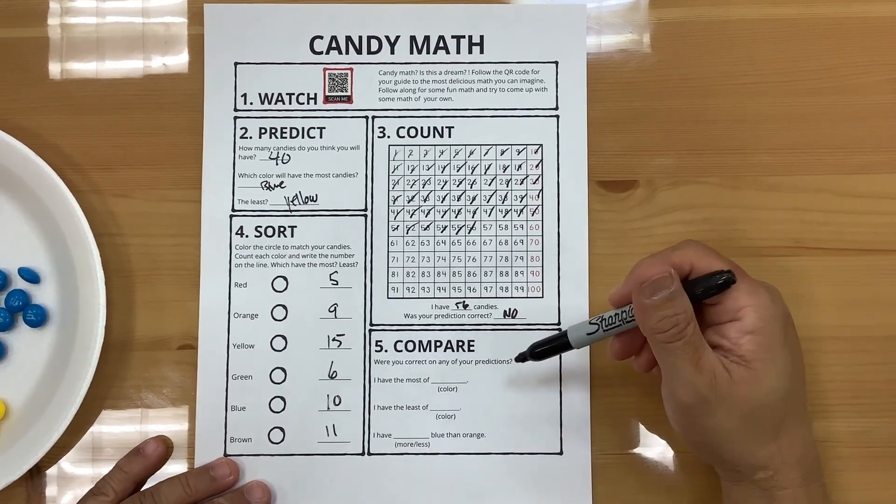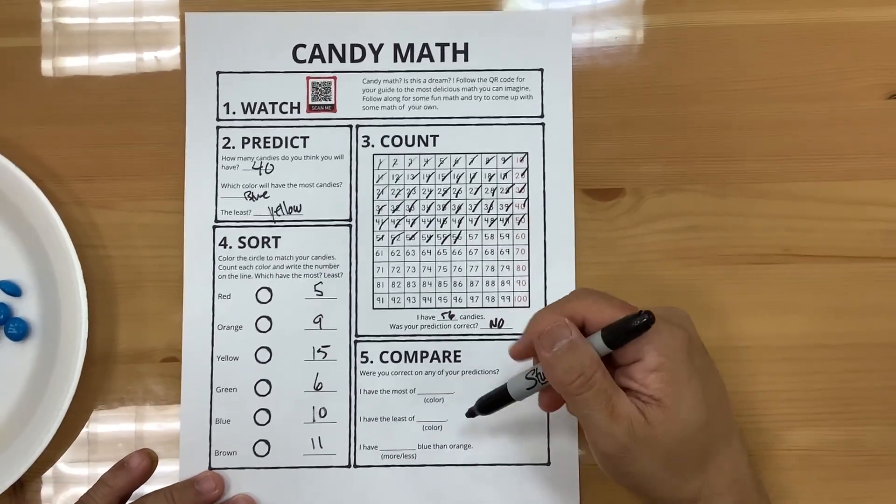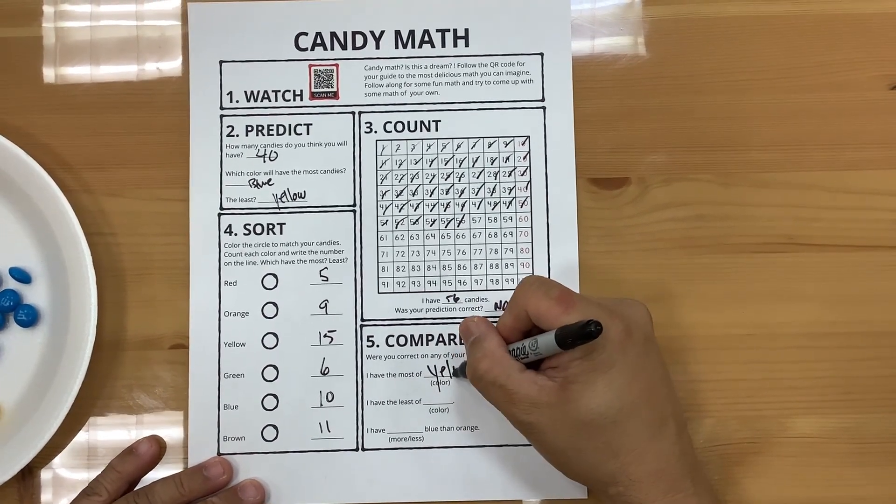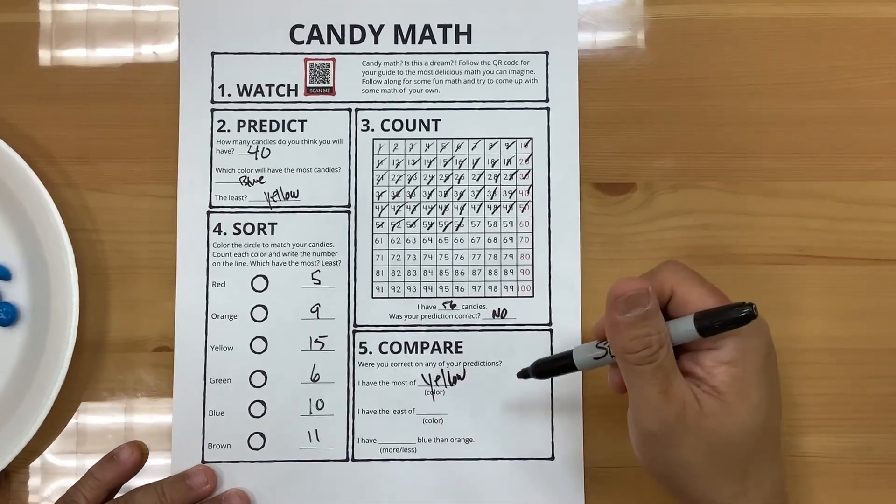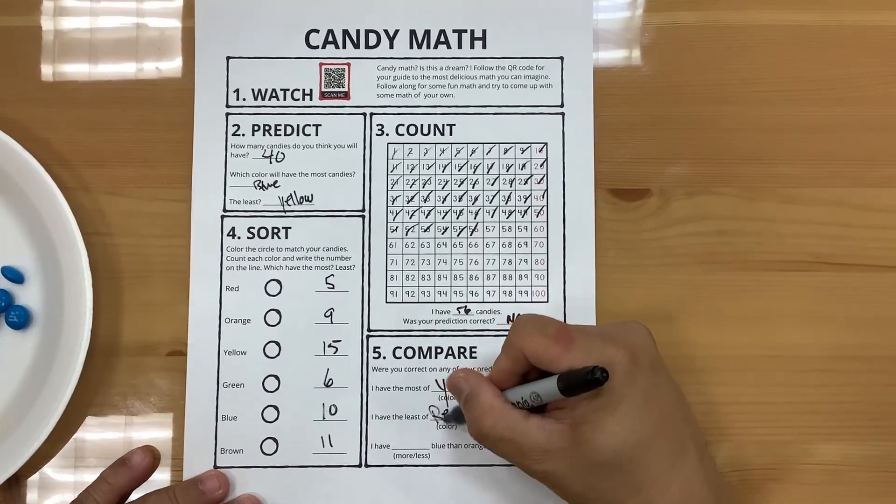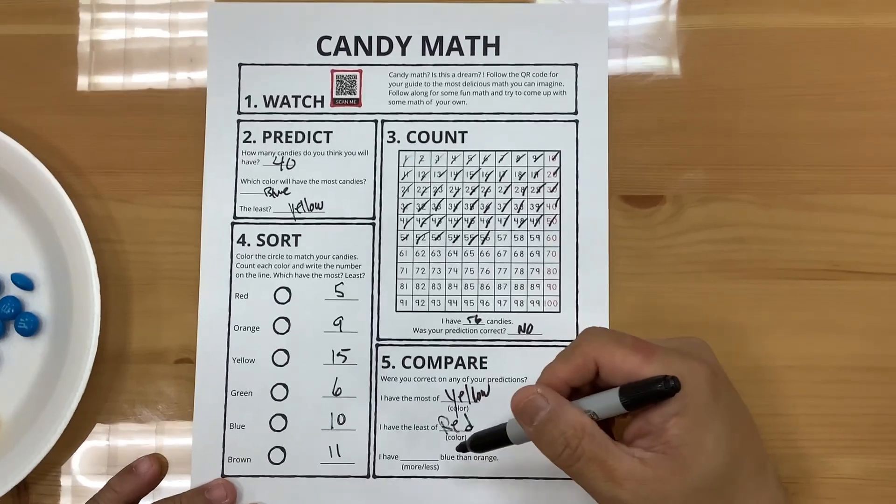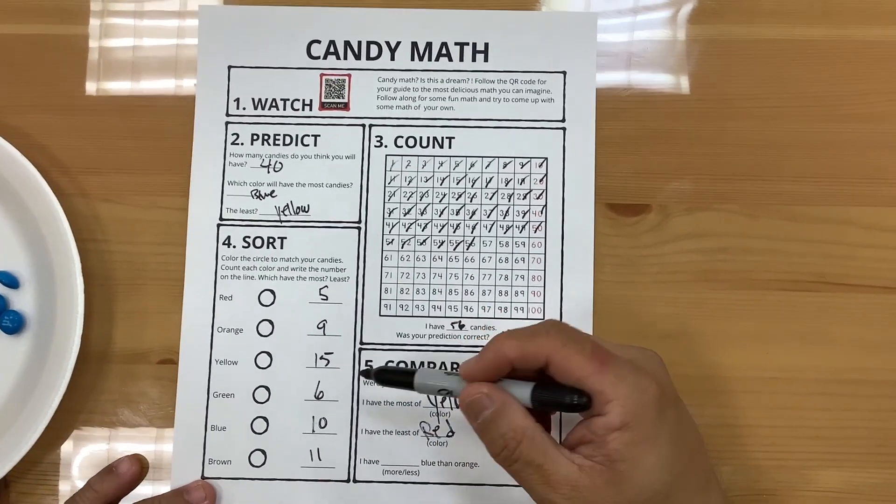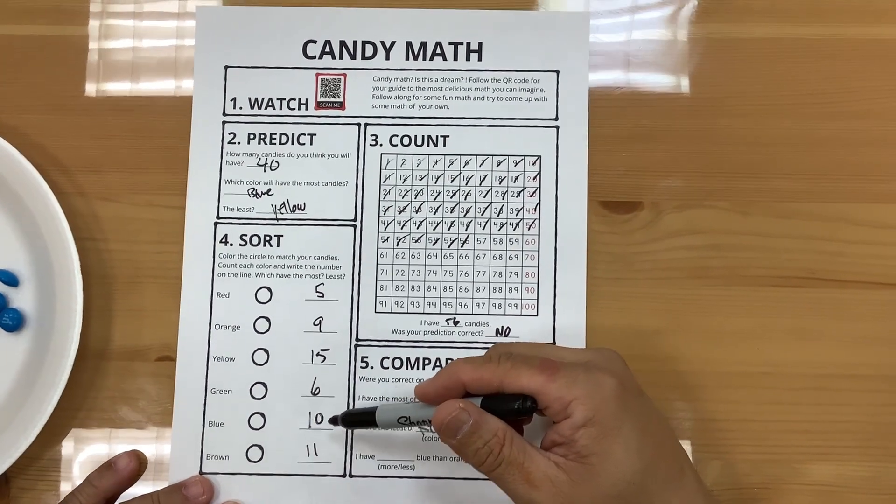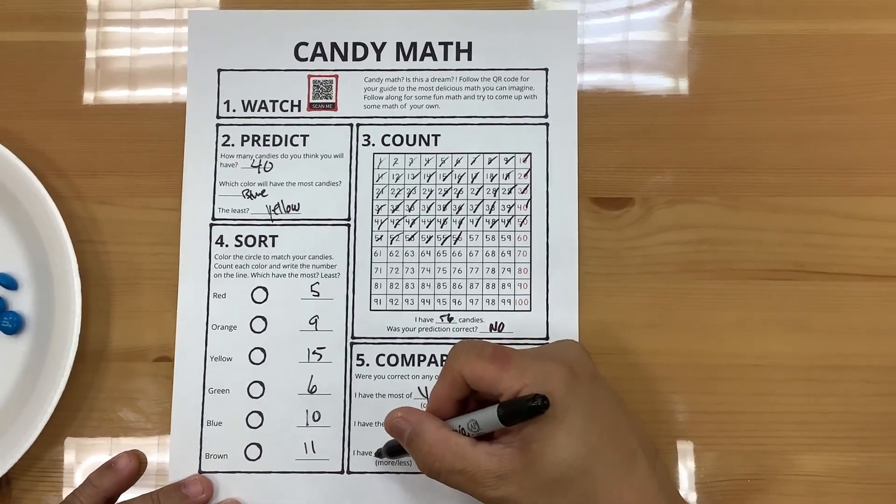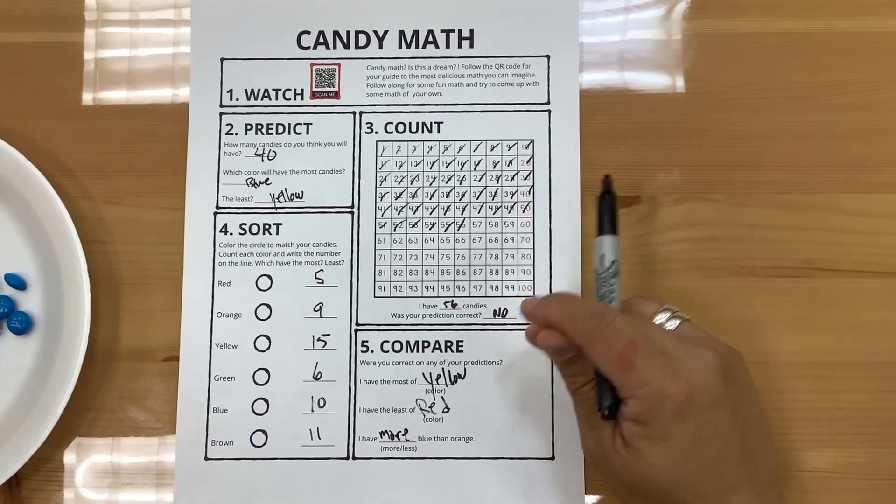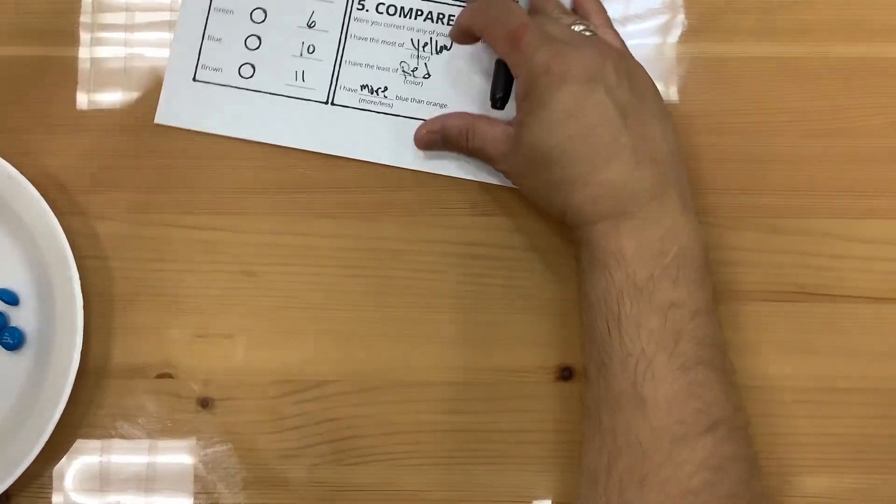Were you correct in your prediction? Oh, compare. I have the most of yellow. The least of red. I have more or less blue than orange. I have more blue than orange. Yep, more blue than orange. Awesome.